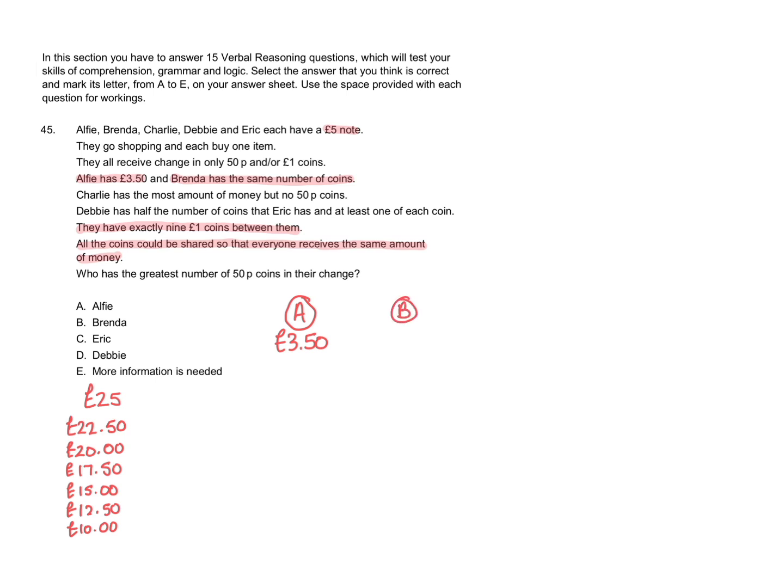We also know that Charlie has the most amount of money but no 50p coins. So this means that Charlie must have £4. If Charlie has the most money he must have £4 because we know Alfie has £3.50. Because Charlie has no 50p coins, £4 is the highest amount of money he can have.